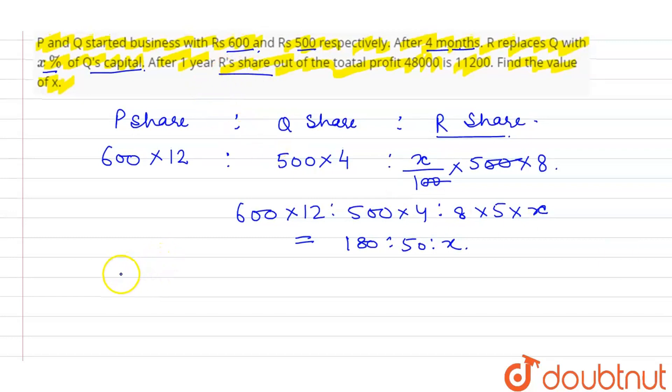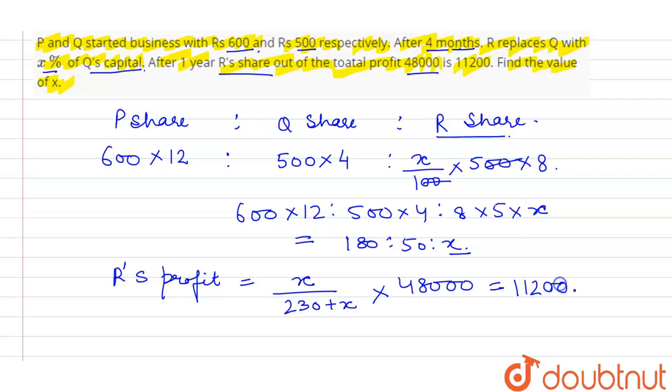Now, R's share is how much? R's profit is how much? R's profit is X upon total, which is 230 plus X. R's profit is 11,200.